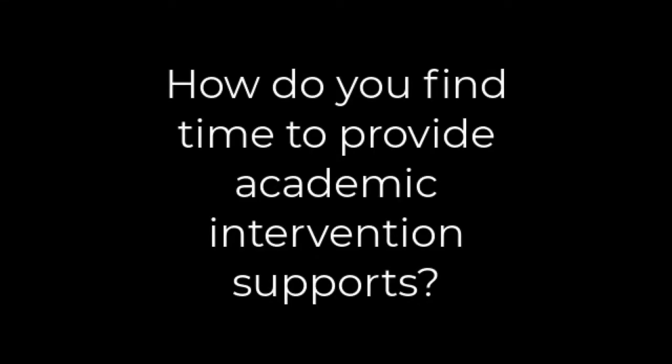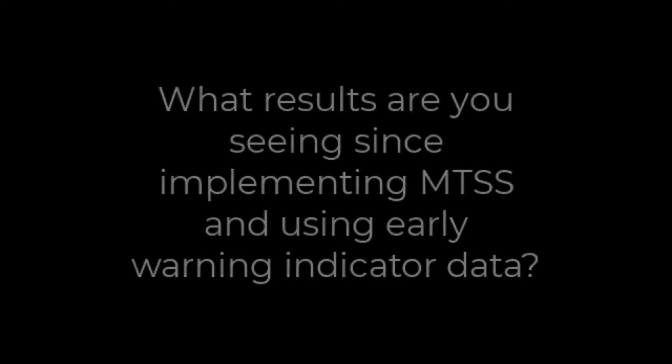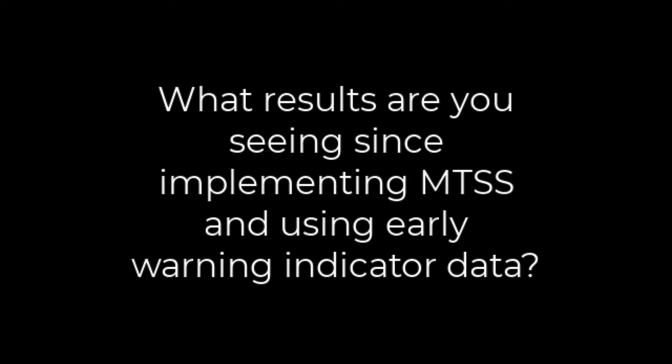How do you find time to provide academic intervention supports? We try to pull students. We have what's called a seminar — it would have been called a study hall. We pull kids out of their seminar. After the student has been identified, we benchmark them backwards and either work on bolstering their math skills or English skills. We'll do that out of seminar or out of one of their elective classes so they don't lose time in math or English. What results are you seeing since implementing MTSS and using early warning indicator data? I'm very competitive — I want to know how my school is doing compared to other schools in the district or in the state. I believe because of the way we analyze our data and then match up students to appropriate interventions, it has made us one of the more successful schools in the area academically.